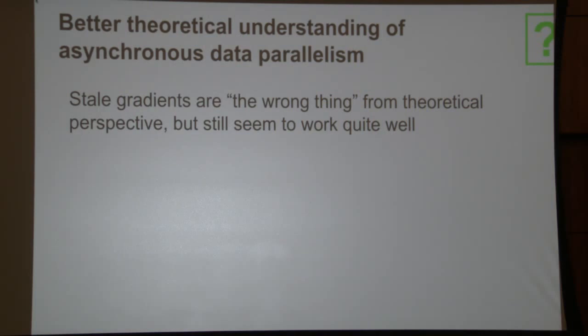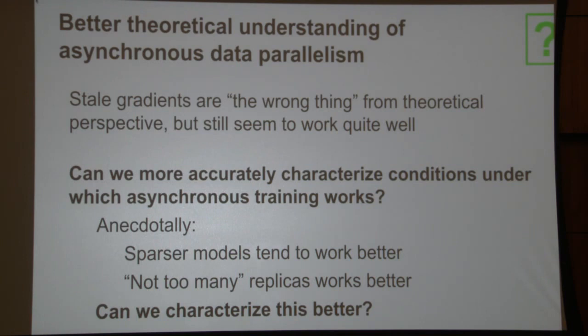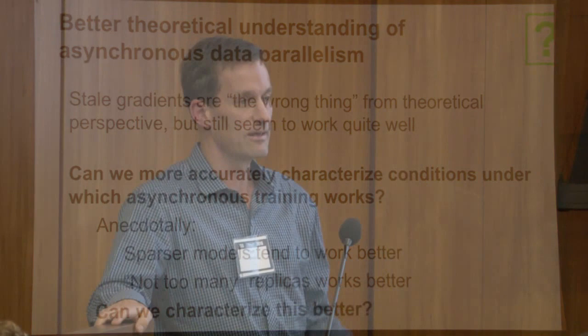A better theoretical understanding of what's going on with asynchronous updates to model parameters would be very useful. The gradients being applied are the wrong thing — they were computed at a different value of the parameter space — yet they still seem to work quite well. Can we more accurately characterize the conditions under which asynchronous training works well or doesn't? Anecdotally, if you throw too many replicas at the problem so gradients get too stale, things don't work — the model explodes or doesn't learn. Can we characterize this better, or are there better approaches to applying asynchronous updates?